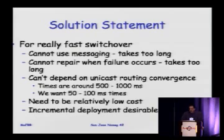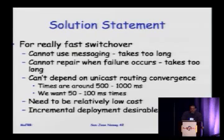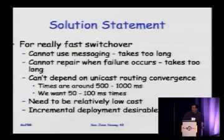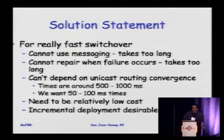To really have a fast switchover, you can't use protocol messaging over the network because it takes too long — there's propagation time over the links and queuing and processing time in the routers. You need something to be in hot standby before the failure occurs. You have to make-before-break at these time frames. You can't depend on unicast routing convergence because the fastest we can get it is around the 100 millisecond range.